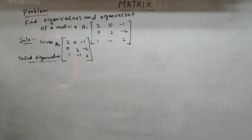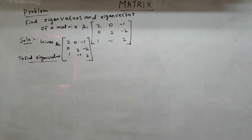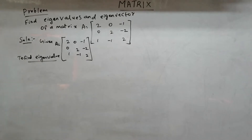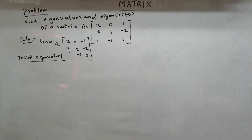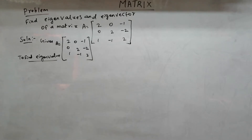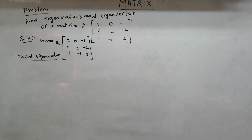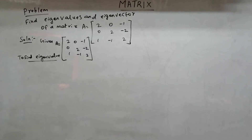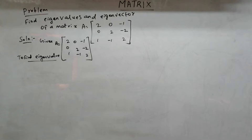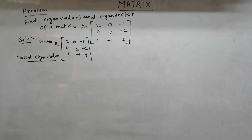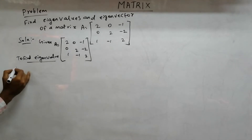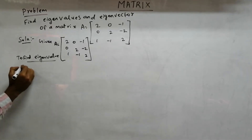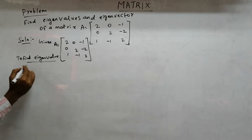First, we find the eigenvalues using the characteristic equation. We find the roots of the characteristic equation, and those roots are our eigenvalues. First, find the characteristic equation.